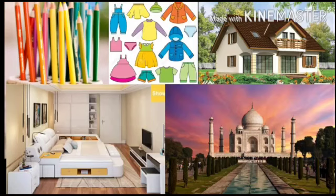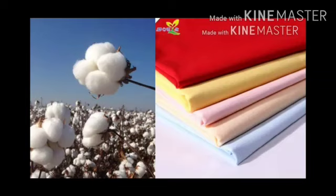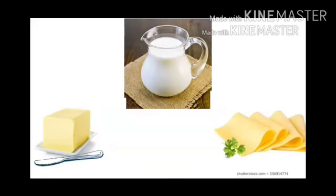Man has made many things for his comfort by using material from nature. For example, man-made furniture and houses are made up of wood, and wood we get from plants, so wood is a natural product. Cotton is a natural product, and cloth is a man-made product. Milk is a natural product, and butter and cheese are man-made products.